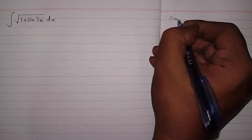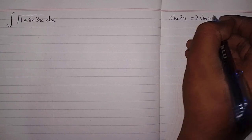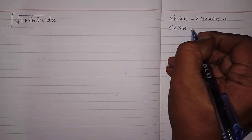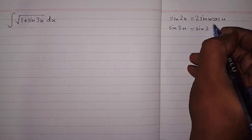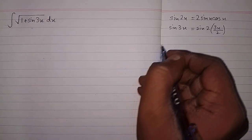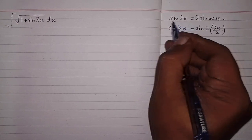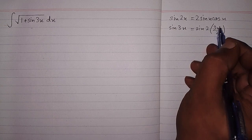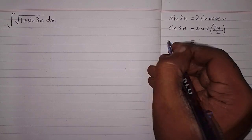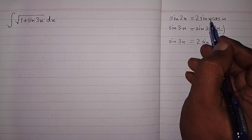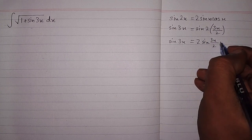In this video we will find the integral of square root of 1 plus sin 3x. We can use the identity sin 2x = 2 sin x cos x. So sin 3x can be written as sin 2 times (3x/2), replacing x by 3x/2 in the formula. Therefore sin 3x can be written as 2 sin(3x/2) cos(3x/2).